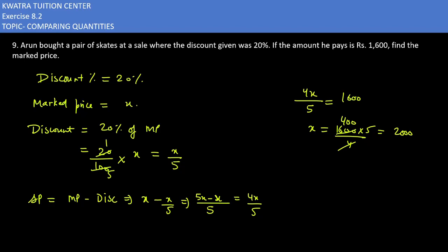So when discount percent is given and the selling price paid is known, first find the discount value as discount percent of mark price. Then use the selling price formula: selling price equals mark price minus discount. Substitute mark price as X and discount as X/5, giving 4X/5. Set this equal to Rs. 1,600 to find the mark price of the skates, which is Rs. 2,000.